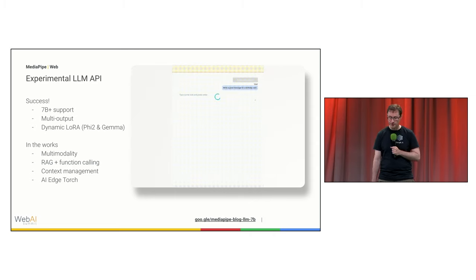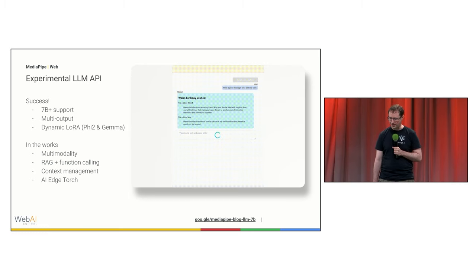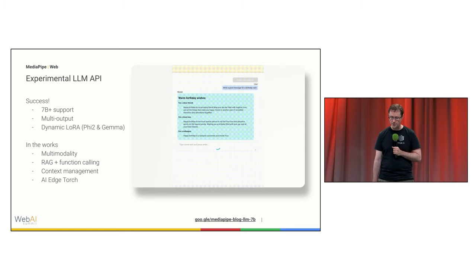And here's what the result looks like. This is a Gemma 1.1 7B model, which is about 8.6 gigabytes — so it's several times larger than any of those previous models — and it's running on a MacBook Pro 2021 laptop.